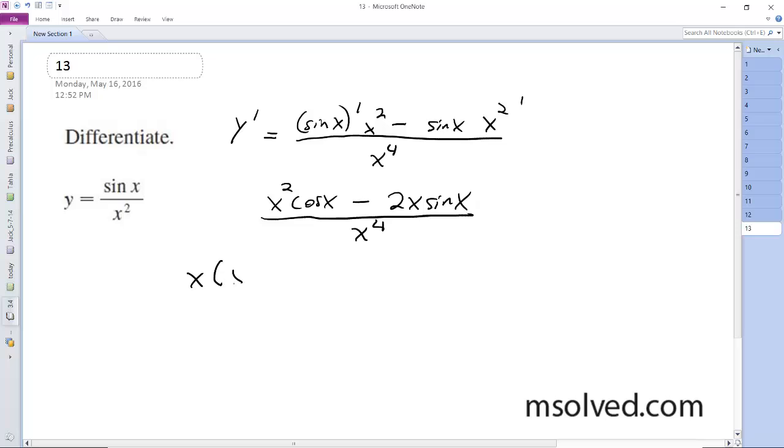so I get x times x cosine x minus 2 sine of x. And then x to the fourth, this becomes x to the third,